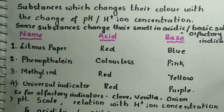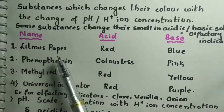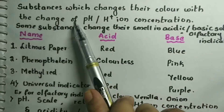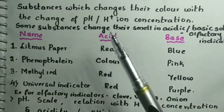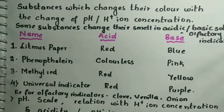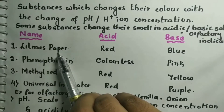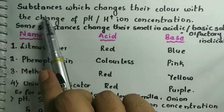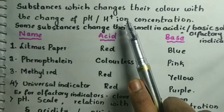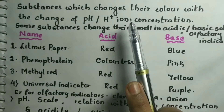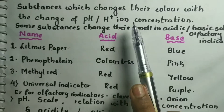We also came across the term litmus paper. Litmus paper is an indicator. Indicators are substances which change their color or smell when the pH or H+ ion concentration changes. They help us determine whether a solution is acidic or basic.